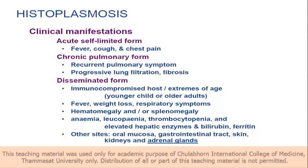Histoplasma is different from talaromycosis because histoplasma loves to stay in lymph nodes — it is possible to find it in lymph nodes. Whereas with talaromycosis, we never find the organism in lymph nodes. So sometimes the infectious disease physician will send us a fine needle biopsy from the lymph nodes for culture or PCR.